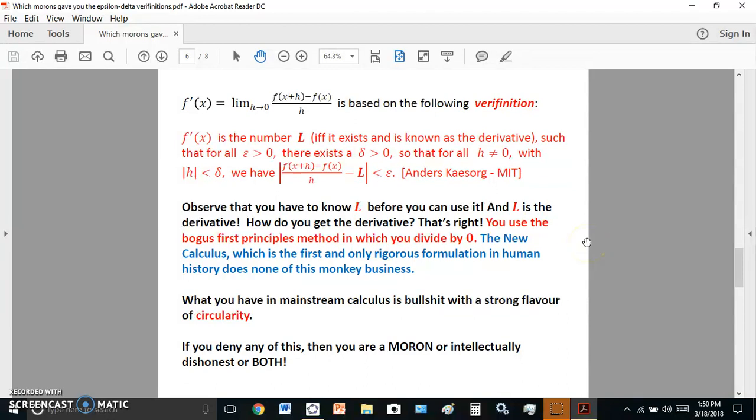You use the bogus first principles method in which you divide by zero. The new calculus, which is the first and only rigorous formulation in human history, does none of this monkey business. Okay, so what you have in mainstream calculus is pure bullshit with a strong flavor of circularity. If you deny any of this, you are a moron or intellectually dishonest or both, and I do not want to hear from you. Please don't write in my comment section that I don't understand limit, you fucking idiot. I understand it better than anyone on the planet. I piss and shit on your lecturers and you. Do you get it? Especially morons from sci.math who will be watching this to learn from me. Let's continue.